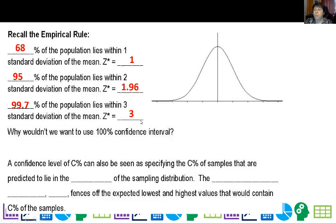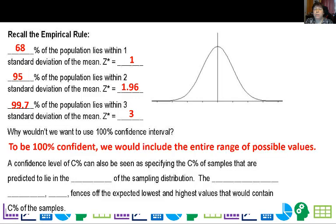99.7% of the population lies within three standard deviation of my critical value would be three. Again, why wouldn't we want to use 100% confidence interval? Well, to be 100% confident, we would have to include the entire range of possible values, which isn't very useful.